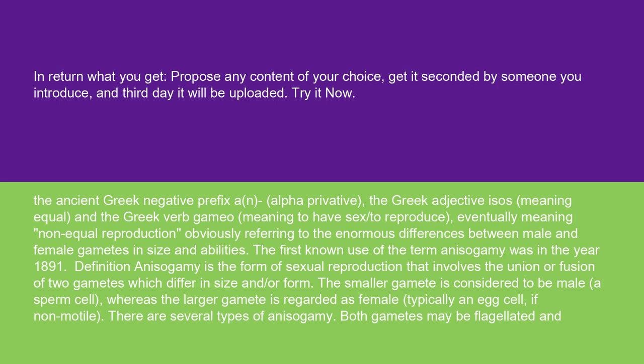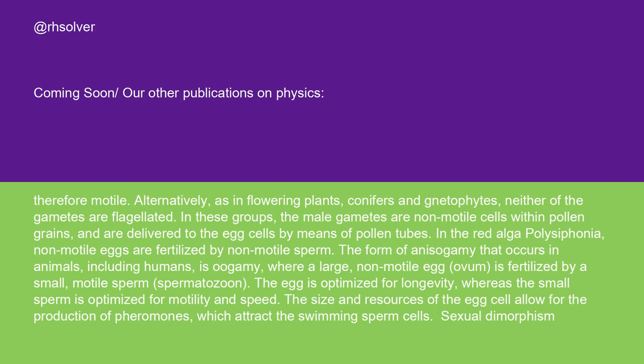There are several types of anisogamy. Both gametes may be flagellated and therefore motile. Alternatively, as in flowering plants, conifers, and gnetophytes, neither of the gametes are flagellated. In these groups, the male gametes are non-motile cells within pollen grains and are delivered to the egg cells by means of pollen tubes. In the red alga polysiphonia, non-motile eggs are fertilized by non-motile sperm.